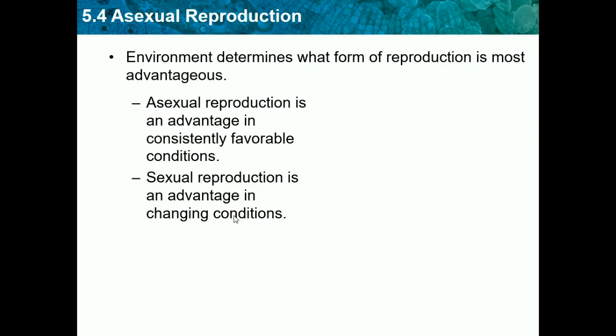If it was consistently favorable and all the food was on the ground, asexual reproduction keeps producing identical short-neck giraffes perfectly suited to that environment. But if they were sexual reproducers, some would produce abnormal long-neck giraffes that struggle to reach the short floor plants. So sexual reproduction would not be good in a consistently favorable condition — that's why asexual reproduction is good for a consistently favorable environment.